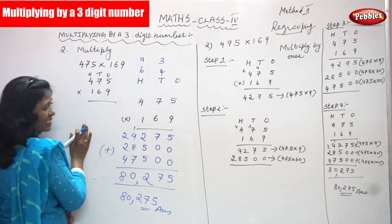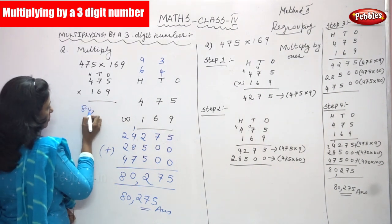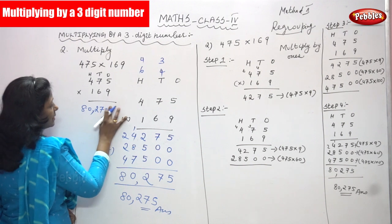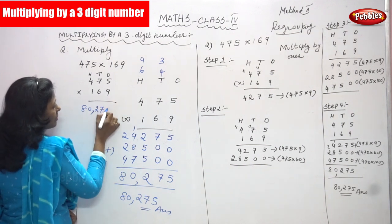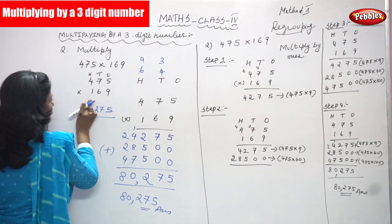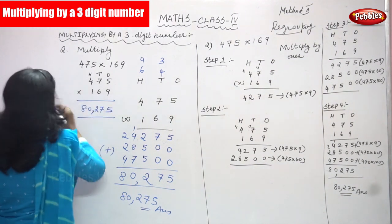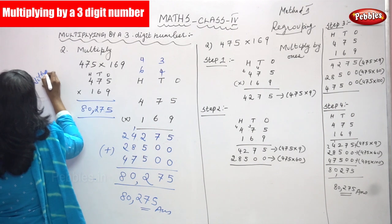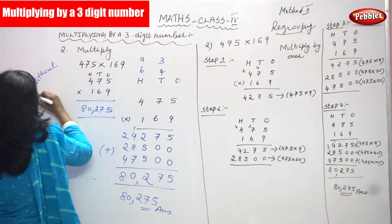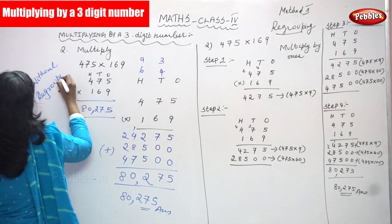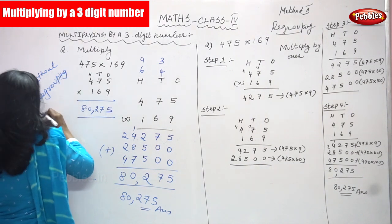This is a normal multiplication and a simple multiplication — Method 1, without regrouping method.